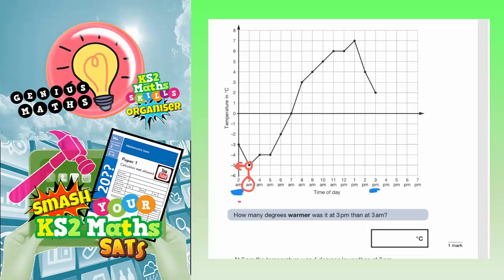So at 3am it was minus 5 degrees C, and at 3pm we need to go to 3pm, which is here, and go up to the point on the graph, which is this one, and then follow it all the way across to the side, and that is 2 degrees. That's level with 2 degrees. So at 3pm it was 2 degrees C.